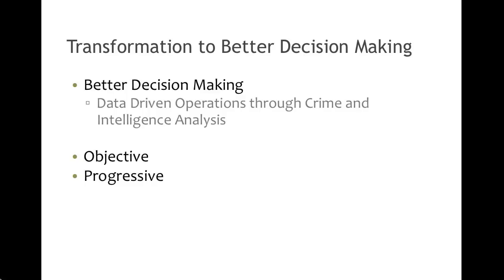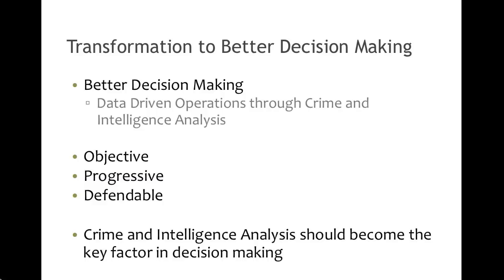Crime and intelligence analysis is progressive and forward thinking. In tight budget times and with limited manpower, we have to make better decisions that are defendable. There are lots of people who would like to Monday morning quarterback particular decisions that are made. The use of crime and intelligence analysis is a stronghold in making your decisions defendable. It's not about what we've always done or what someone wants us to do — it's truly about what the data is representing and what it's saying we should do. Because of all of these things, crime and intelligence analysis should become the forefront of decision making, the key factor in how you make decisions within your organization.